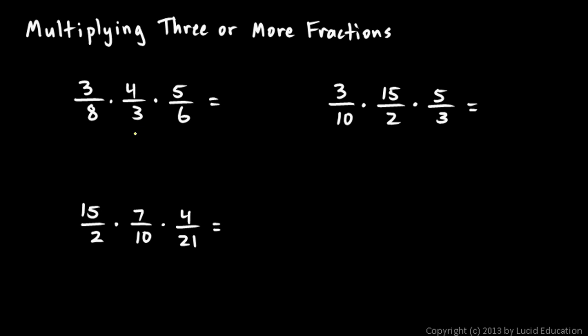Let's look at this first one: 3/8 × 4/3 × 5/6. One thing that stands out is the threes. The threes will cancel each other out, so those both become ones.